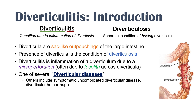Other diverticular diseases include symptomatic uncomplicated diverticular disease, which can present similarly to diverticulitis but is often only transient — patients can have some lower abdominal pain that occurs briefly without other associated issues. There is also a condition known as diverticular hemorrhage, where little vessels associated with a diverticulum can break and cause bleeding, and people can see hematochezia or blood in their stool.